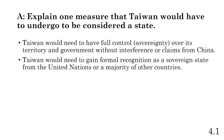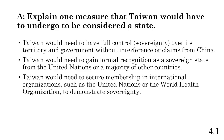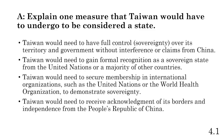Taiwan would need to gain some kind of recognition. The prompt hints that the UN doesn't recognize Taiwan as a state. A good answer is that the United Nations would need to recognize Taiwan as a state, or the majority of countries need to recognize Taiwan as a state. Taiwan would also need to secure membership in international organizations like the UN or the WHO, and receive acknowledgement of its borders and independence from the People's Republic of China.